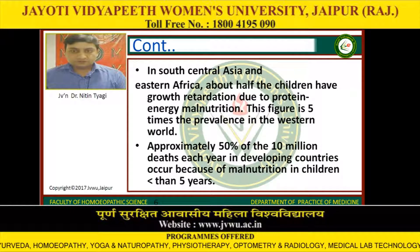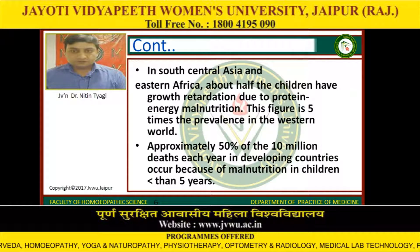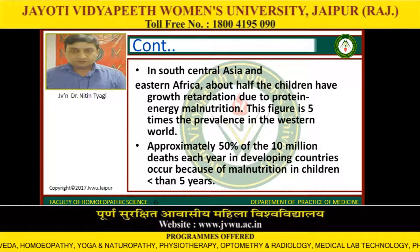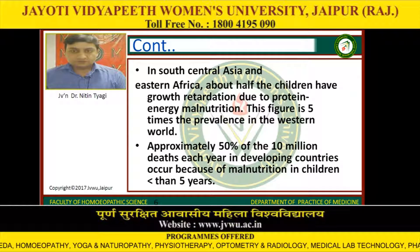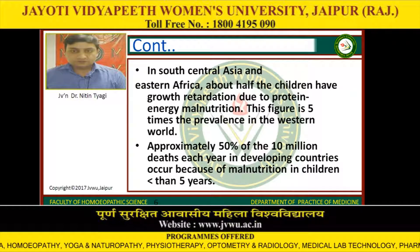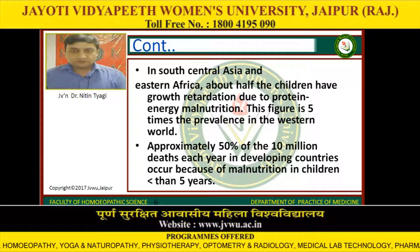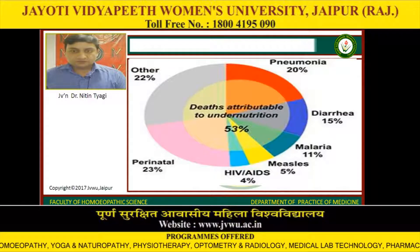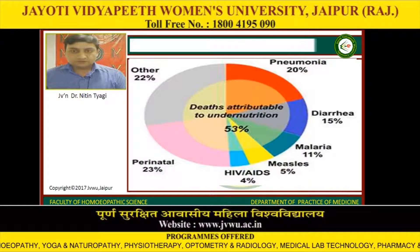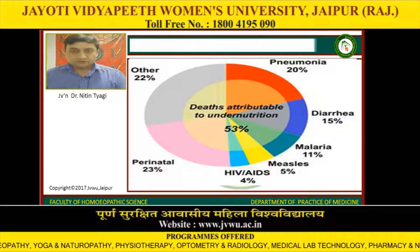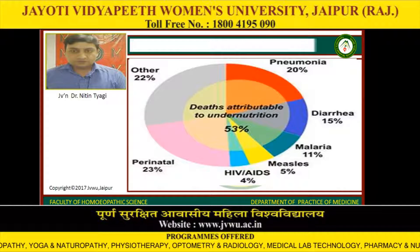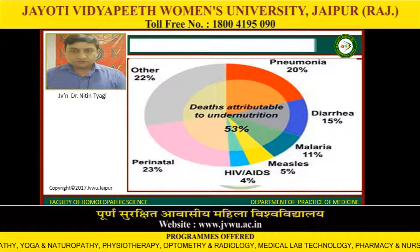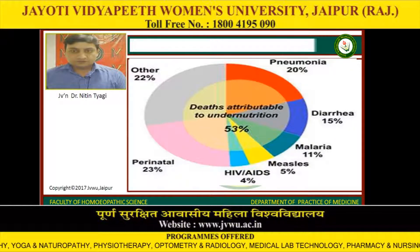Approximately 50% of the 10 million deaths every year in developing countries occurs because of malnutrition in children less than 5 years. The complications of protein energy malnutrition include pneumonia, diarrhea, malaria, measles, HIV/AIDS, perinatal complications and others.